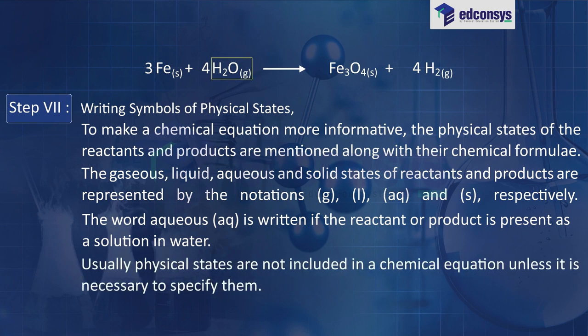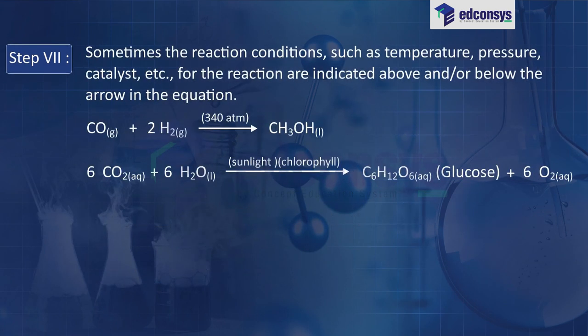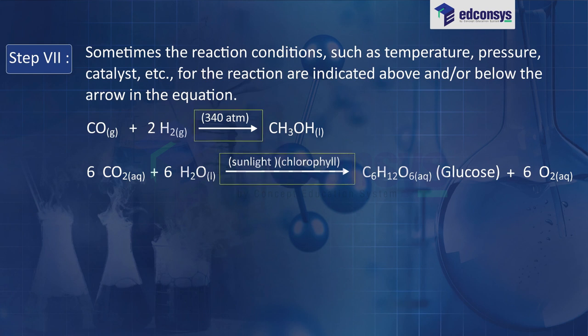Usually physical states are not included in a chemical equation unless it is necessary to specify them. Sometimes the reaction conditions such as temperature, pressure, catalyst, etc. are indicated above and/or below the arrow in the equation.